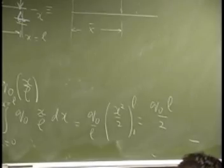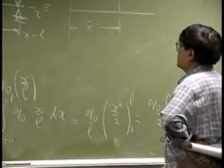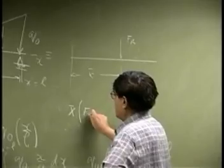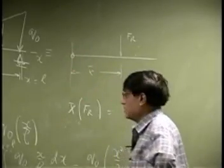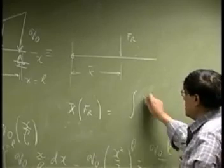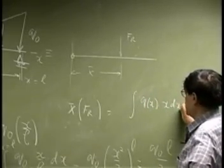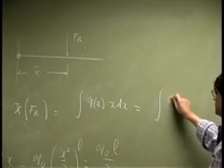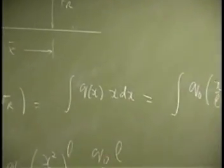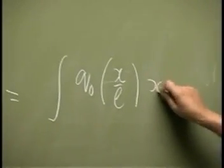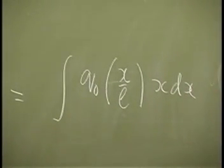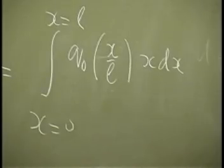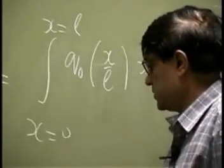To find the location, you get x̄*FR equals the moment here, which is an integration of Q(x) times x dx. So I can write this as Q0*x/L times x dx, with integration going from 0 all the way up to L.